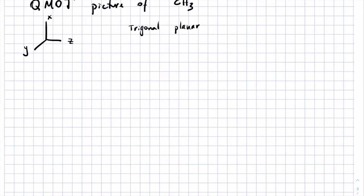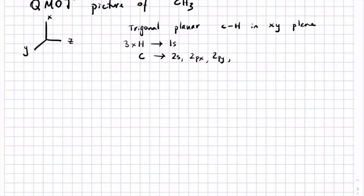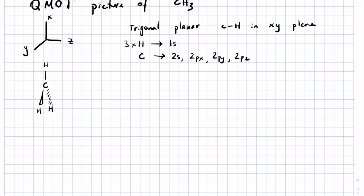Each hydrogen contributes a 1s orbital, and carbon contributes a 2s, 2px aligned along the x-axis, 2py on the y-axis, and 2pz. We're going to mix these together, and anything we draw for an orbital has to be either symmetric or anti-symmetric with respect to this molecule's symmetry. When mixing things together in all possible combinations, an easy one is to start with the lowest energy orbitals and put them together all in phase.